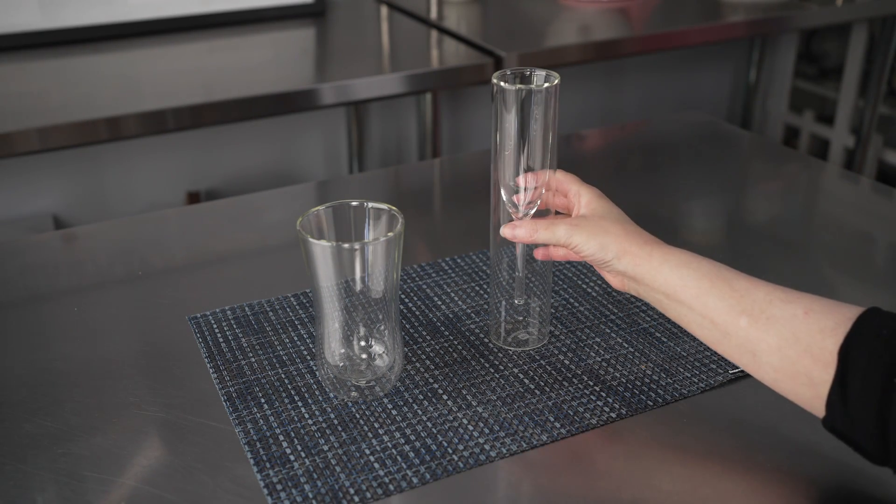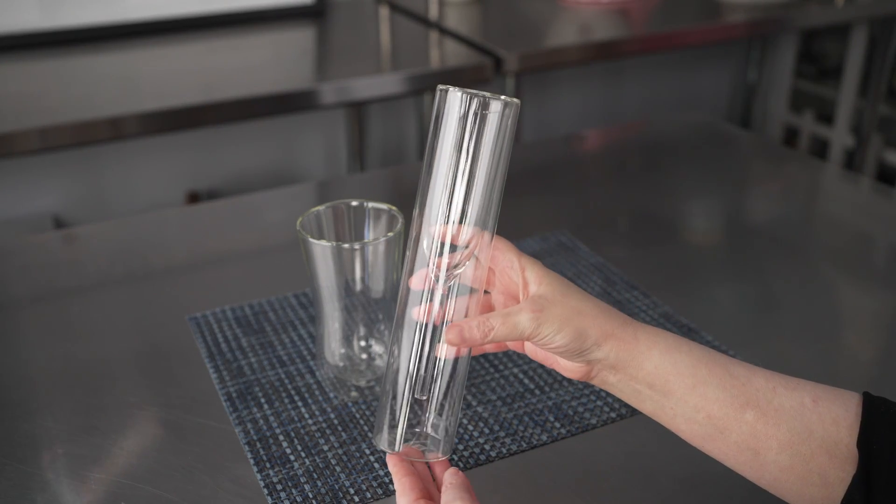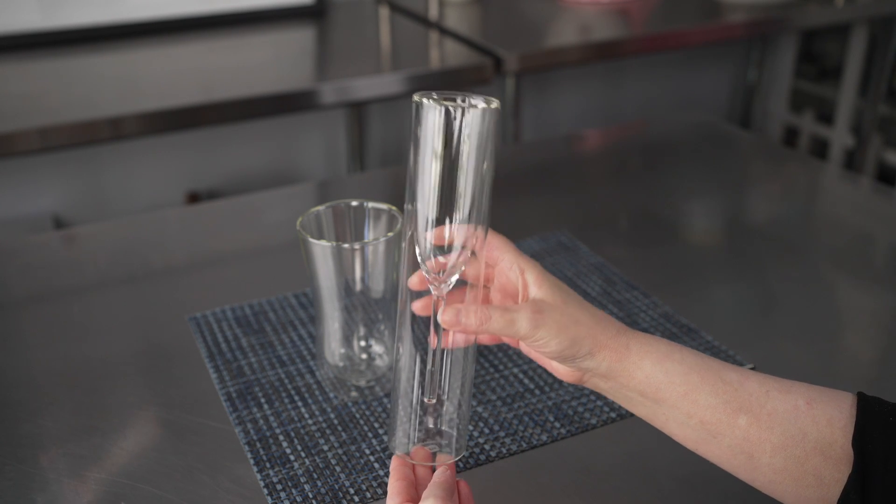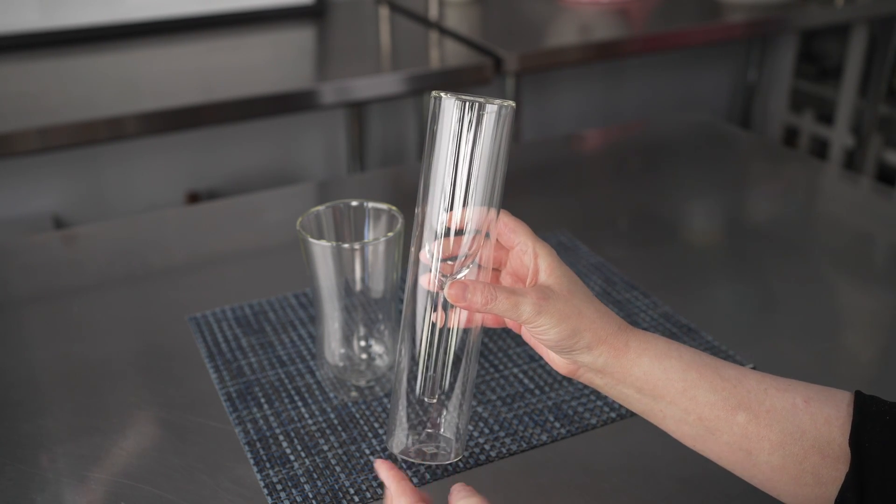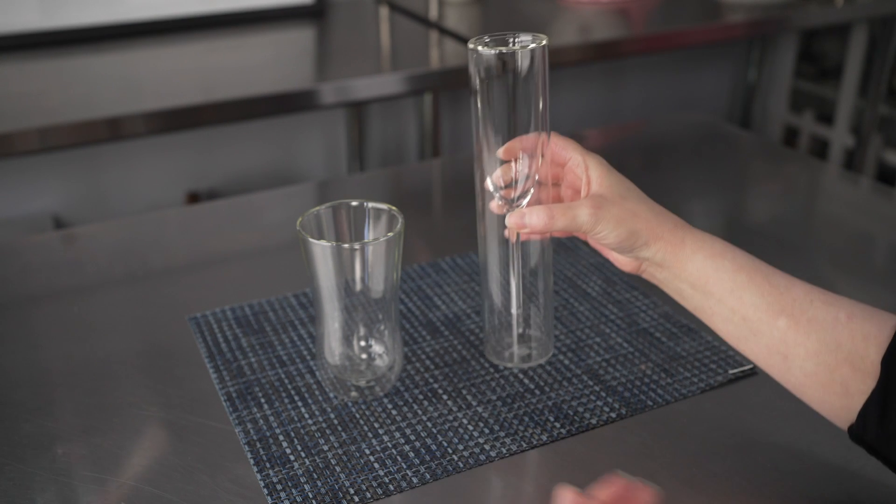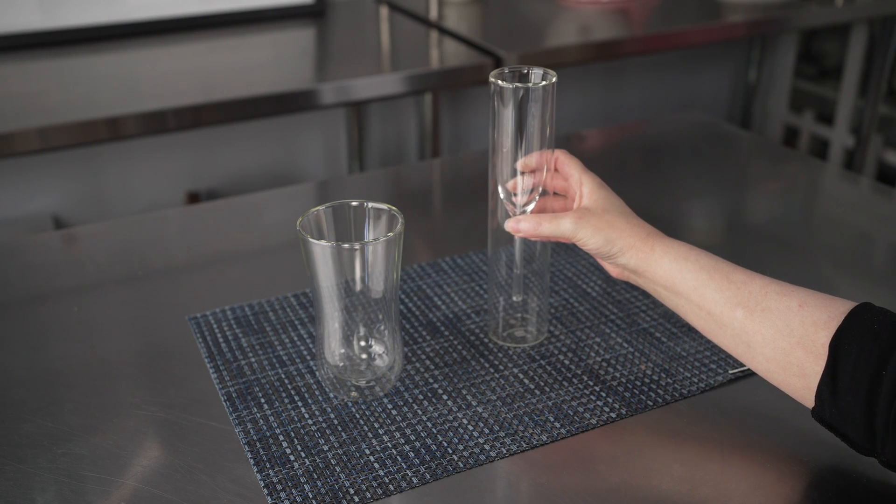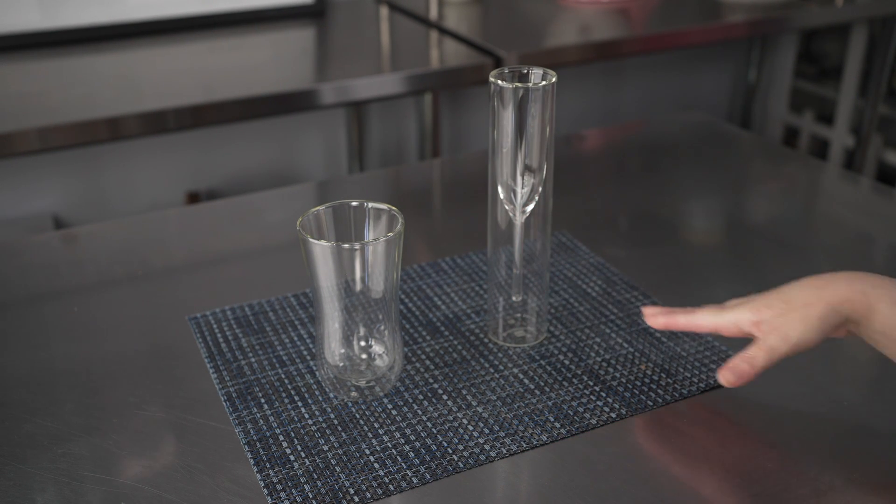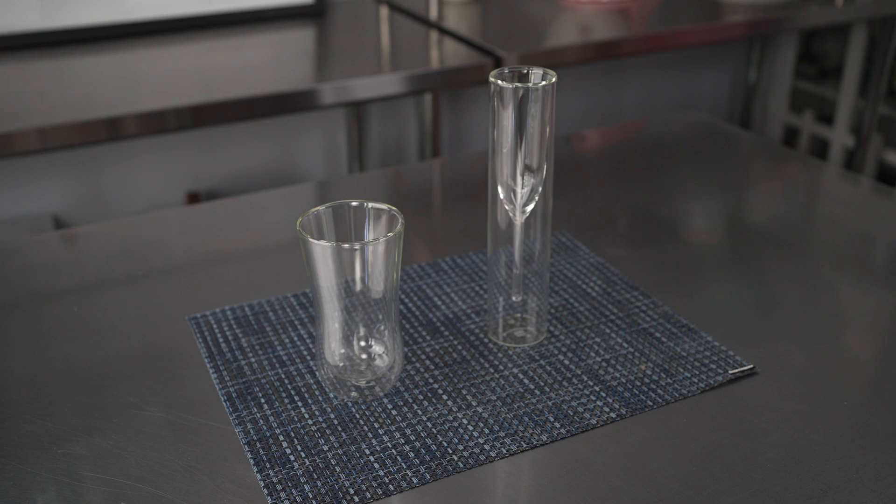We also have the four-ounce Forma champagne flute, which is two inches in diameter by nine and a quarter inches high. They all feature a wonderful double-walled design that helps to maintain the temperature of your beverages.